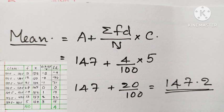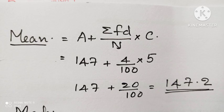A is the assumed mean, 147 plus 4 by 100 into 5. The answer is 147.2.